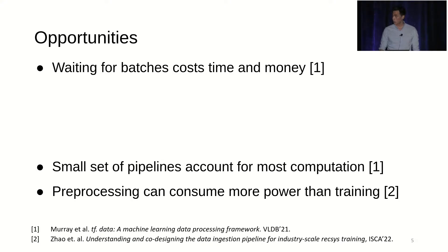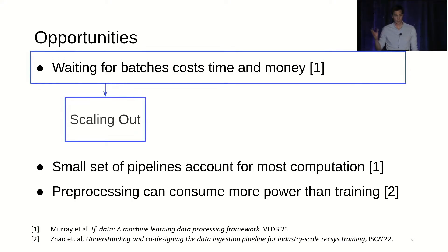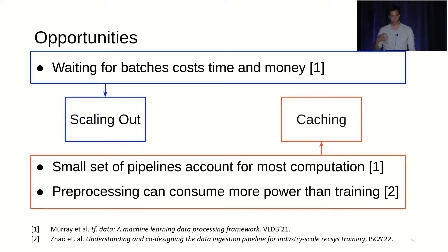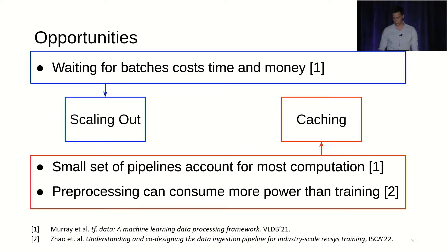The good news is that there are opportunities we can tackle here. We can scale out the input pipeline and thus eliminate these bottlenecks. We can also utilize caching to avoid redundant computation, reduce power consumption, and free up computational resources so they can be used for other jobs.